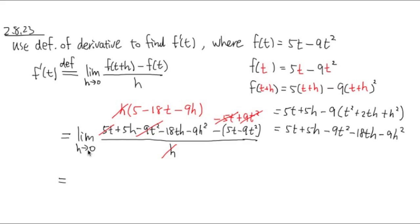Now we just need to plug in 0 into h, and let's see what we get. So I have 5 minus 18t minus 9, and now the h is equal to 0. So I have to just plug in the 0 into the parentheses.